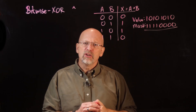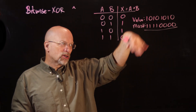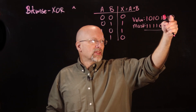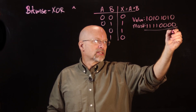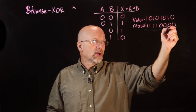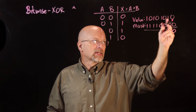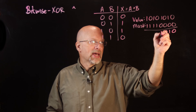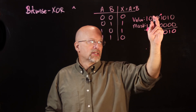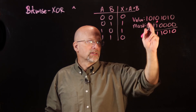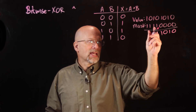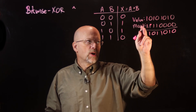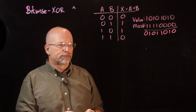Let's use that definition to do our Bitwise operation. In this column: 0 and 0 — that's the same, output 0. 1 and 0 — that's different, output 1. 0 and 0 — same, output 0. 0 and 1 — different, output 1. 1 and 1 — same, output 0. 0 and 1 — different, output 1. 1 and 1 — that's the same, output 0.